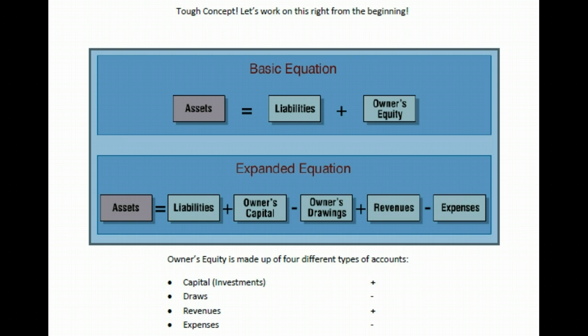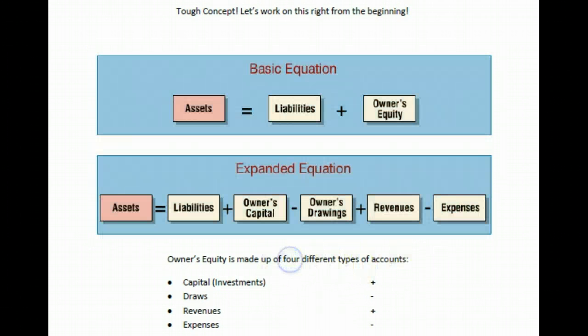We expanded this Basic Accounting Equation in the area of owner's equity. The Expanded Accounting Equation kept assets intact and liabilities intact, but it broke owner's equity out into the four accounts that tend to make it up. There is Owner's Capital, which increases owner's equity; Owner's Drawings, which decrease the total of owner's equity; Revenues, which increase the total of owner's equity; and Expenses, which decrease owner's equity. So owner's equity has four different types of accounts that live within it.